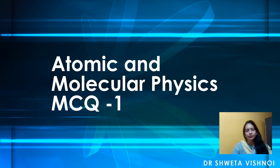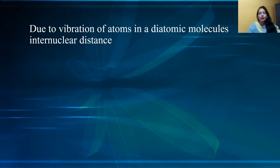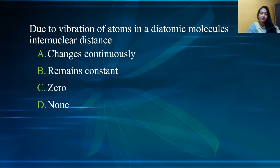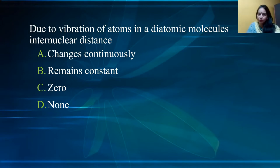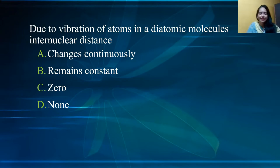The second question is: due to vibration of atoms in a diatomic molecule, the inter-nuclear distance — changes continuously, remains constant, zero, or none. The two atoms of a diatomic molecule do not remain fixed in a relative position, but they vibrate along the line joining them. As they are connected by a massless spring, the distance R between the two atoms changes in a periodic manner about a mean R₀. So the correct option is: it changes continuously.